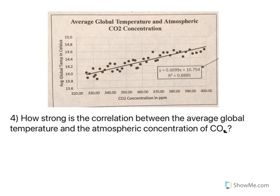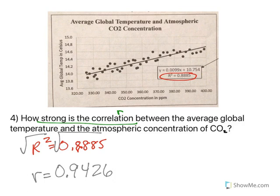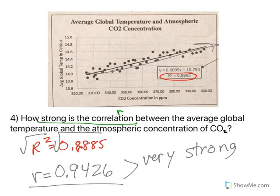How strong is the correlation between the average global temperature and the atmospheric concentration of CO2? If we're talking about correlation, we need to talk about R. We have R squared equals 0.8885. To find R, we square root both sides, which gives R equals 0.9426. Because R is greater than 0.9, we would say this is a very strong positive correlation. There is definitely a relationship between the concentration of CO2 in parts per million and the average global temperature.